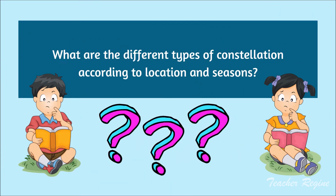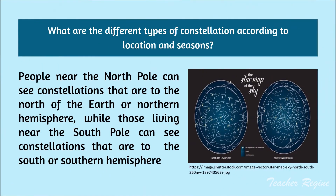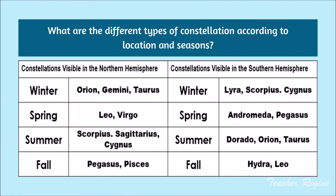What are the different types of constellation according to location and seasons? People near the North Pole can see constellations in the Northern Hemisphere, while those near the South Pole can see constellations in the Southern Hemisphere. These are seasonal constellations. There are also constellations visible all year long — these are circumpolar constellations.